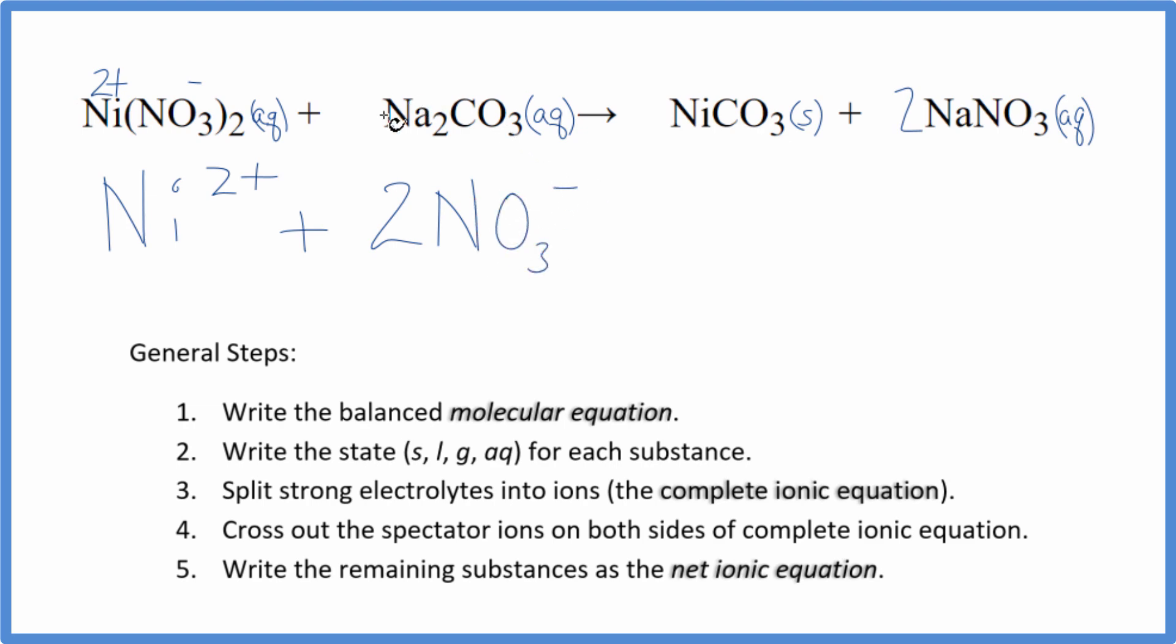and then sodium is in group one on the periodic table. That's one plus, the whole carbonate, two minus. So two sodium ions, and then just the one carbonate ion, CO3 two minus. And these are the reactants in our net ionic equation.